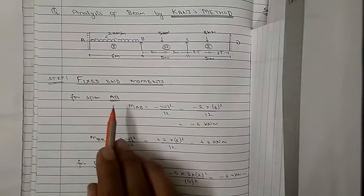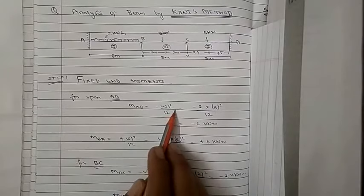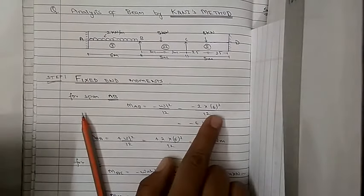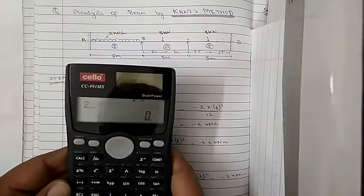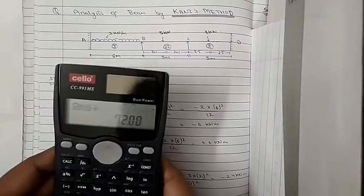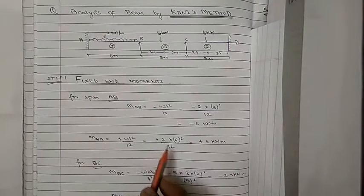First, we find the fixed end moments for span AB. MAB equals minus WL²/12 because it is a UDL, so minus 2×6²/12 equals minus 6 kN·m. MBA equals plus WL²/12, giving plus 2×6²/12 equals plus 6 kN·m.